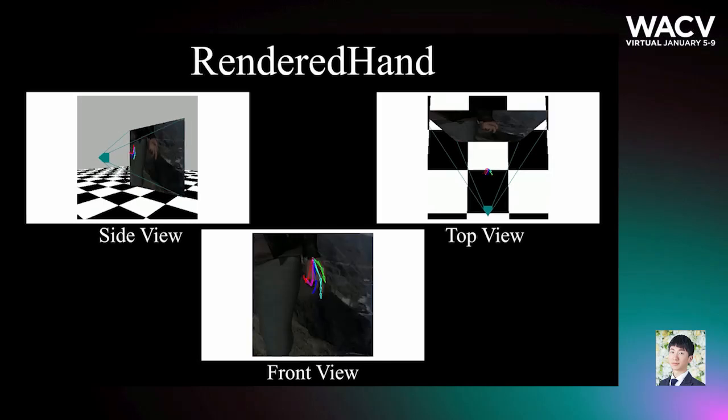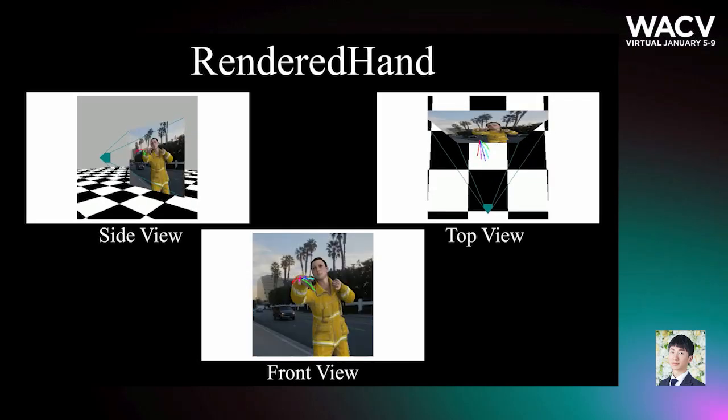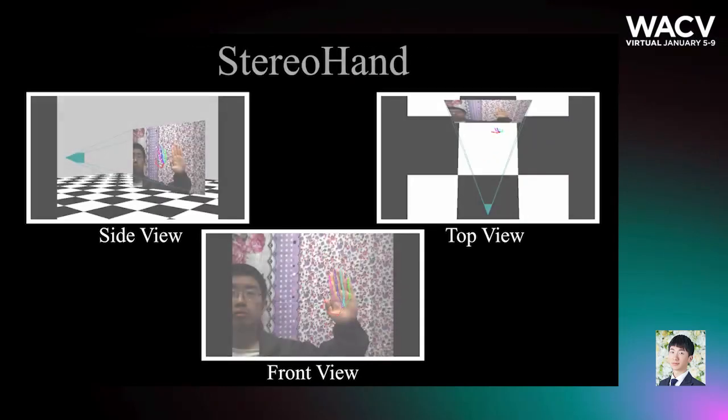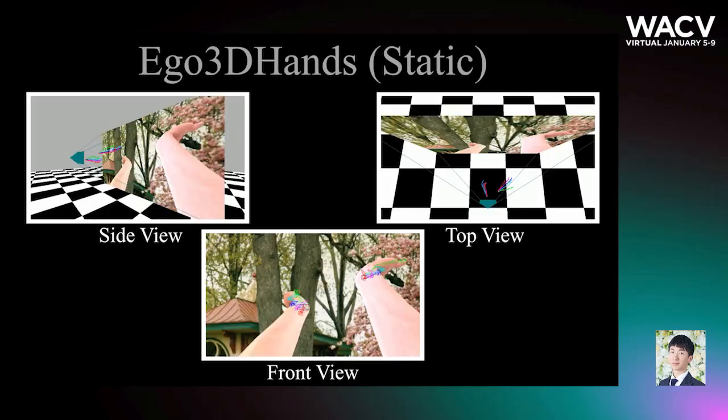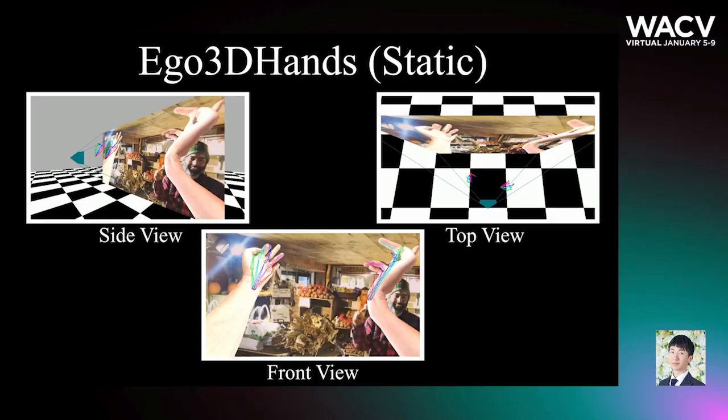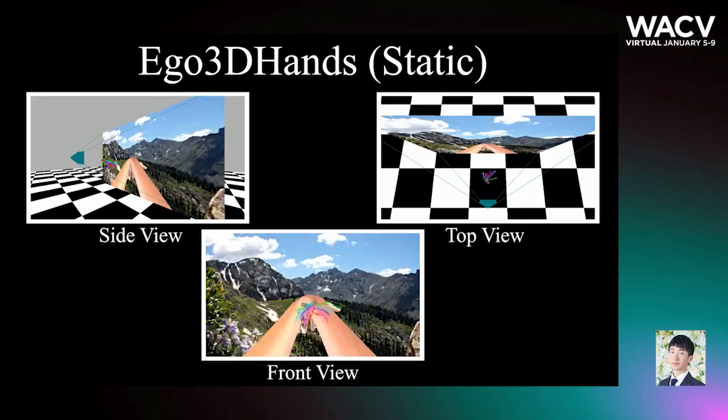We show through our results that we outperform methods that utilize additional information for single hand 3D canonical pose estimation, and we further achieve promising results for two hand 3D global pose estimation.